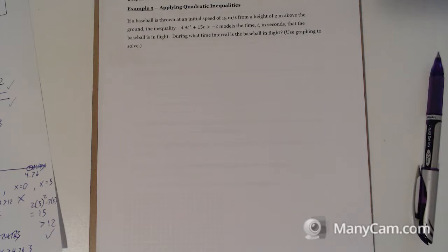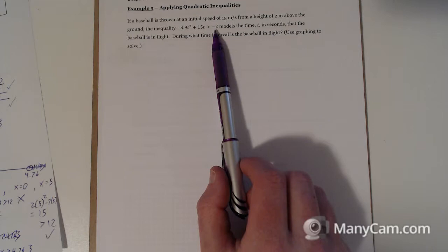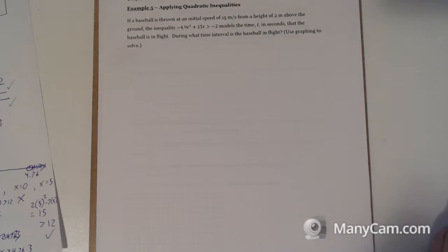If a baseball is thrown at an initial speed of 15 meters per second from a height of 2 meters above the ground, the inequality negative 4.9 T squared plus 15 T is greater than negative 2 models the time T in seconds at the baseball's in flight. Okay, so it's thrown from 2 meters above the ground. And the reason they got the negative 2 here is they're calling the height it started at as 0. So you want the height to be above negative 2 because that negative 2 will have hit the ground again. During what time interval is it in flight? Using a graph and calculate it yourself. So we need to graph this. But you cannot graph what you're seeing. Well, you could. You could graph two separate lines. Maybe we want to do it that way.